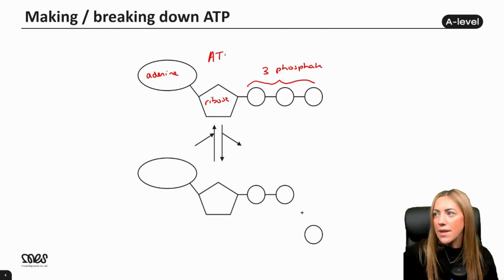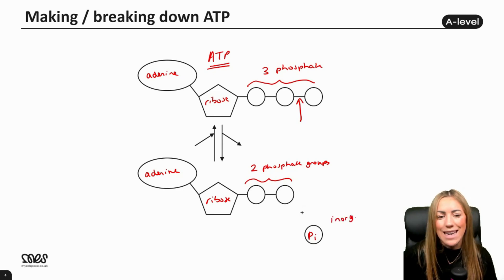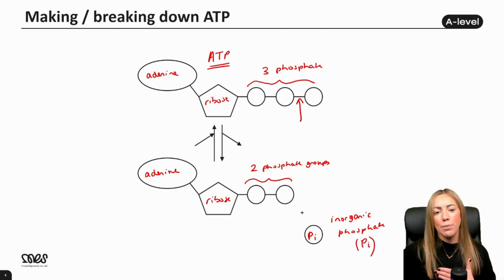What we've got here is ATP at the top, which stands for adenosine triphosphate, because it has three phosphate groups. When we hydrolyze it, at the bottom we've still got our adenosine, our ribose sugar, but now only two phosphate groups because we've hydrolyzed this bond here. We've removed that last phosphate group, which gives us an inorganic phosphate.